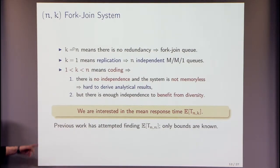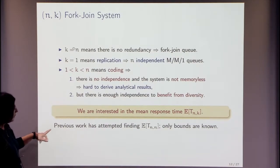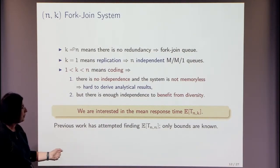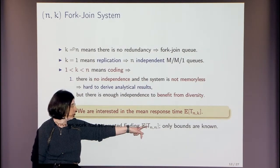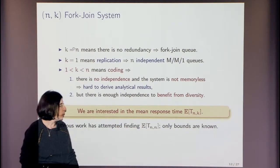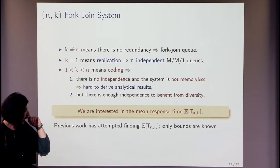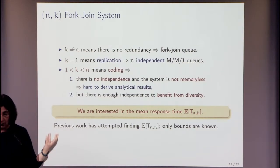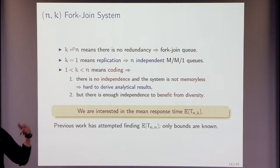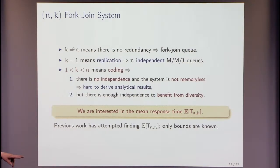We're interested in mean response time. Previous work has attempted to analyze the fork-join queue, but only bounds are known. In fact, a closed form for the expected value exists only for N=2 with everything exponential — so the M/M/1 fork-join queue is notoriously hard.